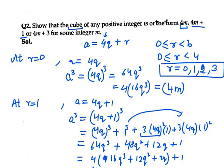So now you can see that we have received 4m, 4m plus 1, and 4m plus 3. Therefore, for the cube of any positive integer, it could be in the form of 4m, 4m plus 1, or 4m plus 3. That's the answer for question number 2.